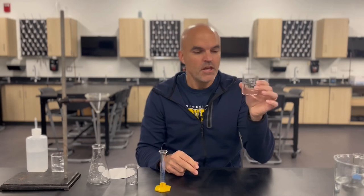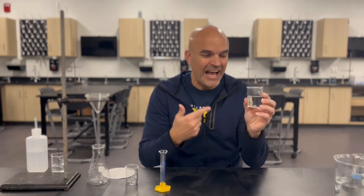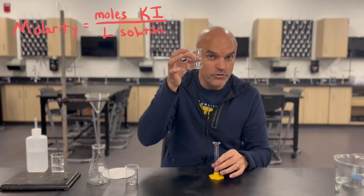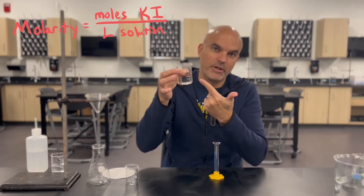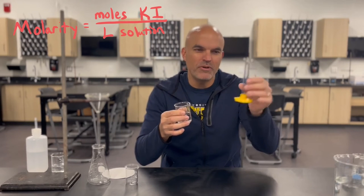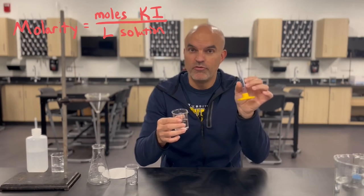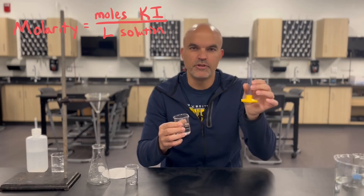Today we're going to determine the concentration of a solution — not salt water, but a solution of potassium iodide dissolved in water. I want to know what the concentration is: how many moles per liter, the molarity of the solution. To do this, I'm going to take just a portion of this solution, because a small amount poured out will have the same concentration. I'm going to take about 9 to 10 milliliters using this small graduated cylinder, which is pretty accurate for volume measurements. Alternatively, you could use a burette for even greater accuracy.